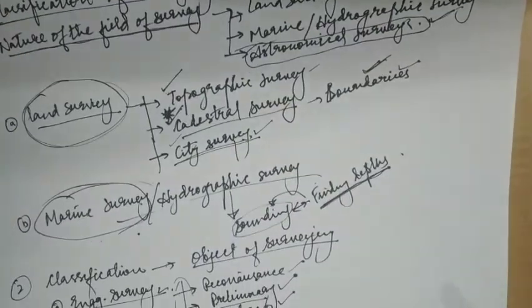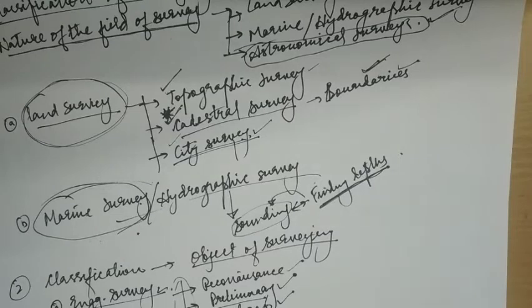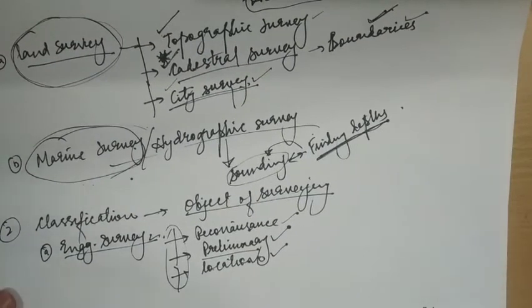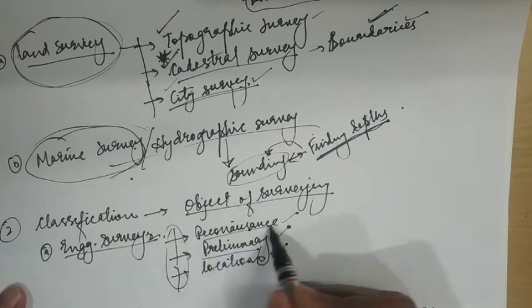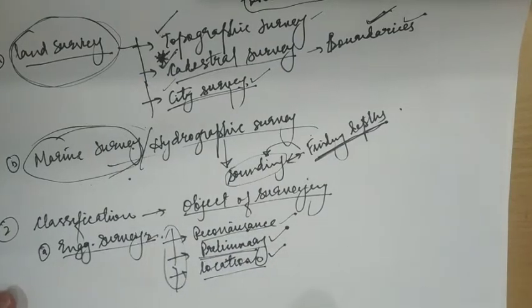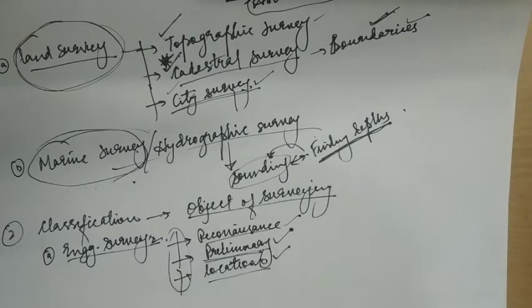Coming to the second category of classification: classification based on objective of surveying. On this basis, surveys may be classified as engineering survey, military survey, mine survey, geological survey, and archaeological survey. Engineering survey: the objective is to collect data for designing roads, railways, irrigation, water supply, and civil disposal projects. Engineering surveys are further subdivided as reconnaissance, preliminary, and location. Reconnaissance is the survey for determining feasibility and estimation of the scheme.